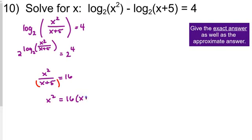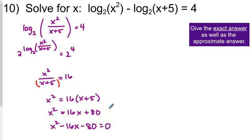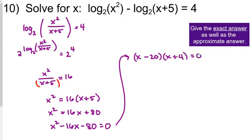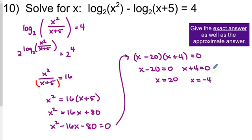We have x squared equals 16 times the quantity x plus 5. Distributing the 16 and moving everything to one side, it looks factorable: x minus 20 times x plus 4. Setting each factor equal to 0, we get x equals 20 or x equals negative 4. Don't forget to check for extraneous solutions — don't automatically eliminate a negative answer. Plugging in: 20 squared is positive and 20 plus 5 is positive, so that's fine. Negative 4 squared is positive and negative 4 plus 5 is positive, so both answers work.